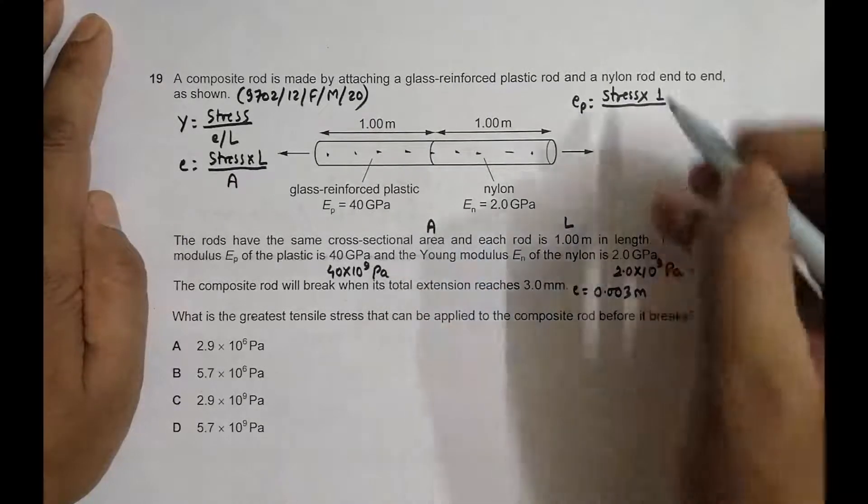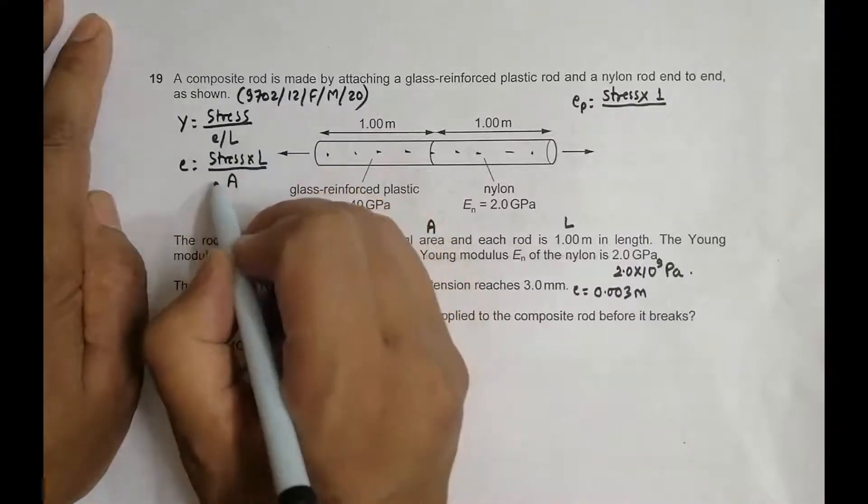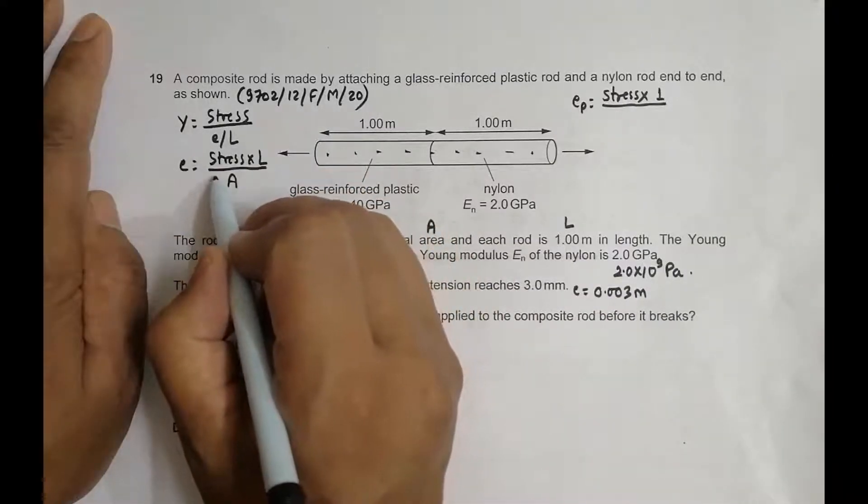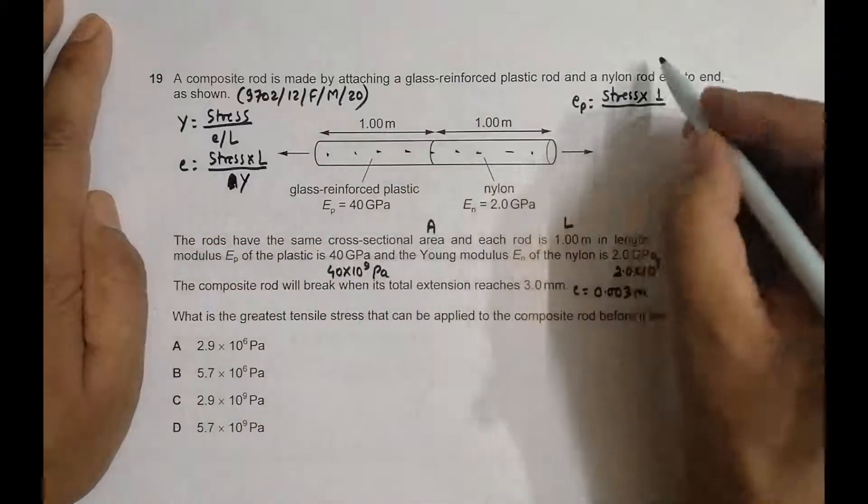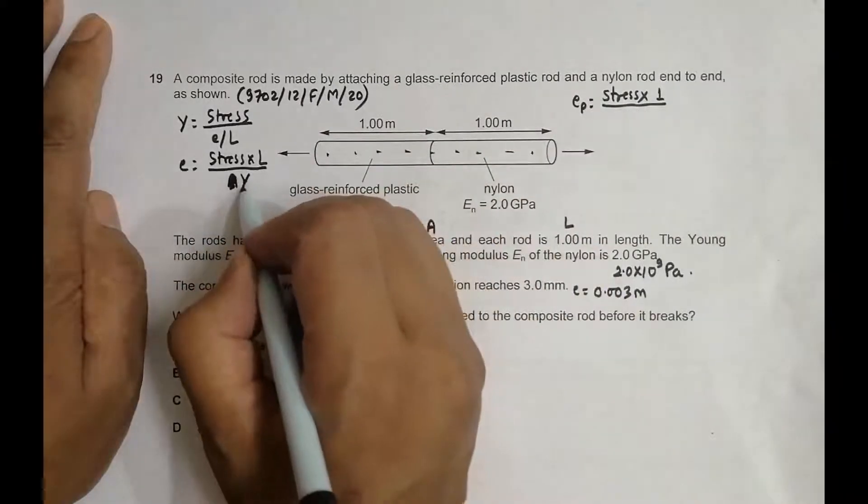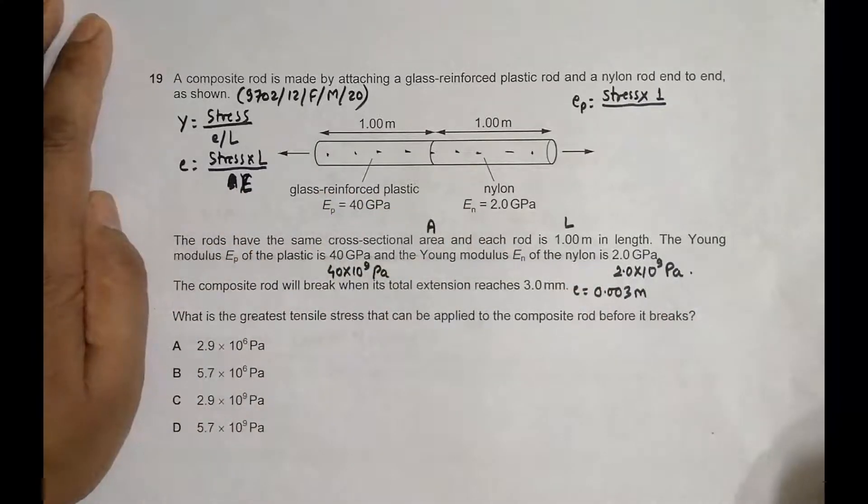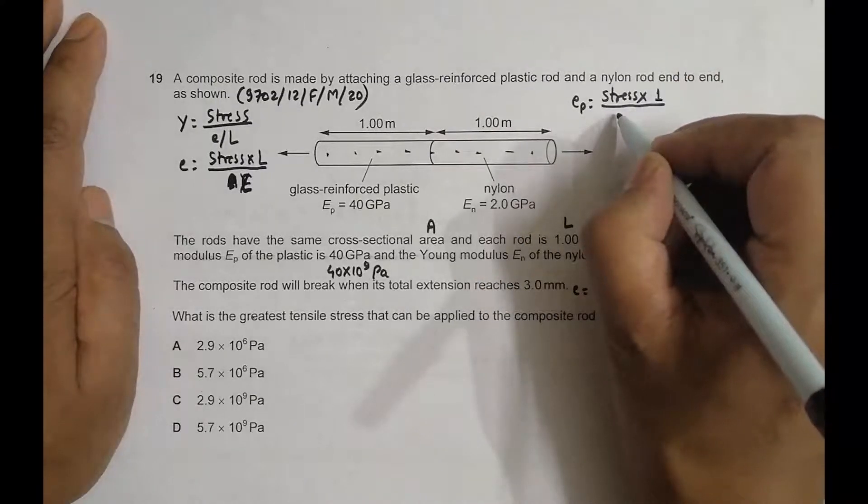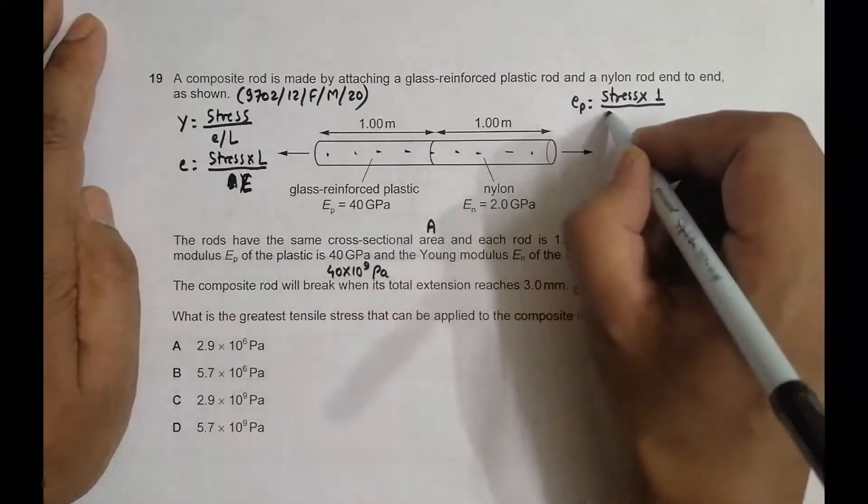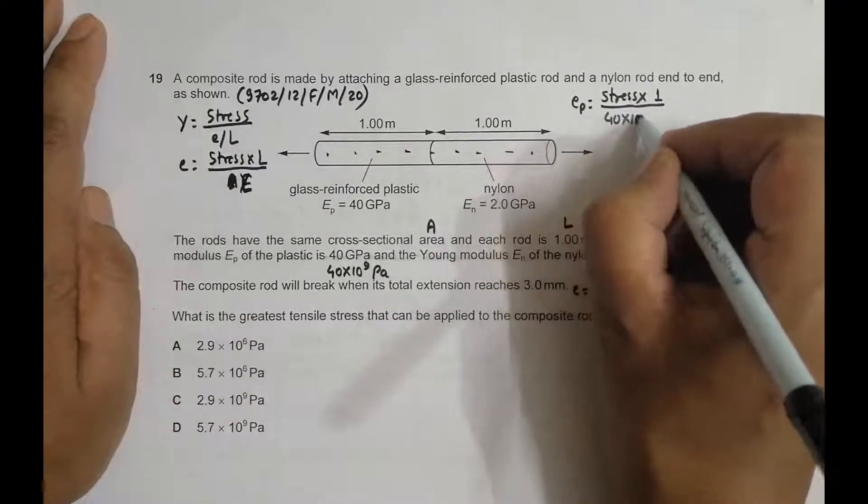I forgot to add Young's modulus here. In most syllabi they use Y for Young's modulus, but Cambridge uses E, so let's follow that convention. So Ep equals 40×10⁹ Pa.